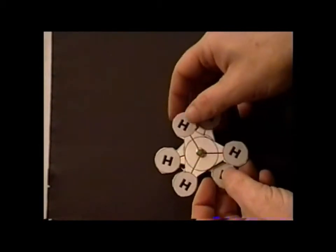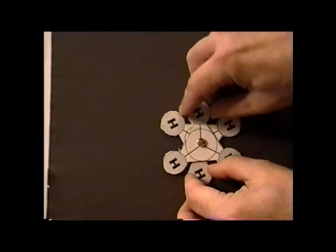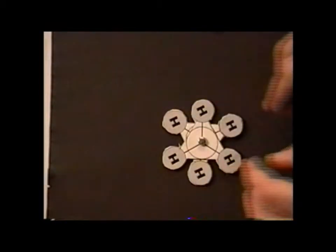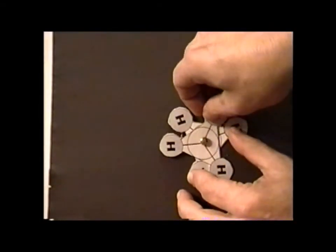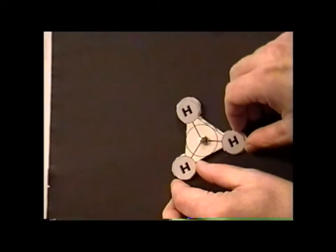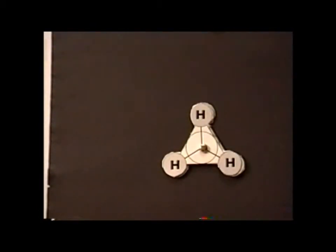Now, for ethane itself, it turns out that the staggered conformation, this particular arrangement, is the low energy conformation. When we have the eclipse conformation, this is the high energy version.